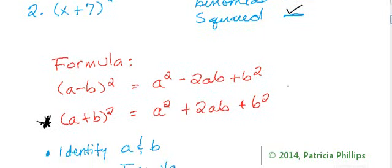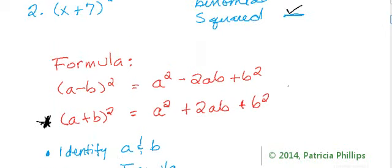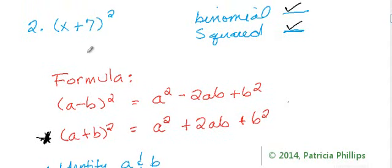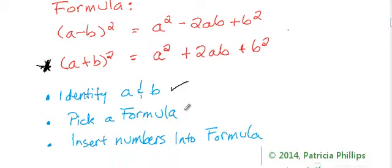So we've picked a formula. Well, if you need bullet points or numbers, then what we'll do is identify a and b. So the problem was x plus seven squared. So x will be our a, seven will be our b. Next thing we do is pick a formula. And we picked the second one because we have a plus sign between our terms.